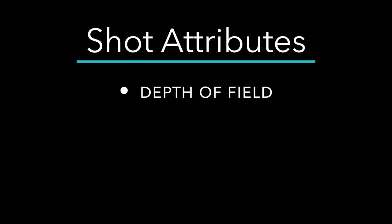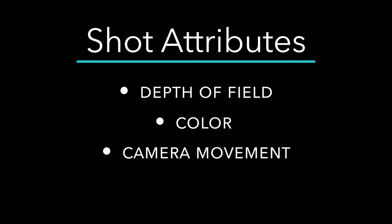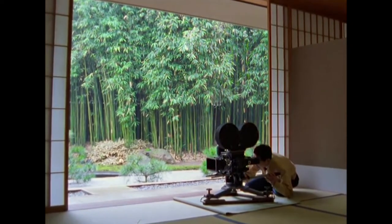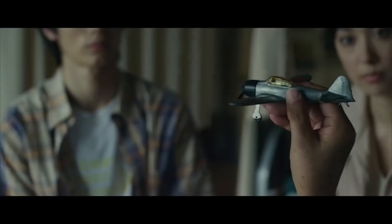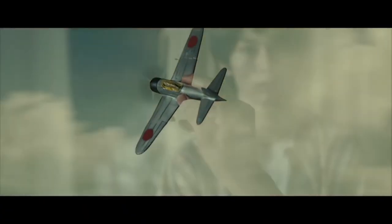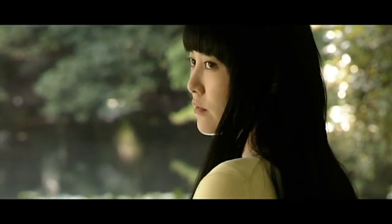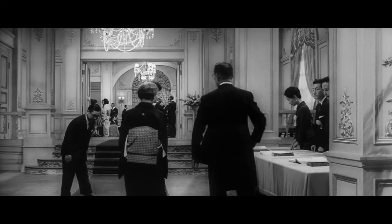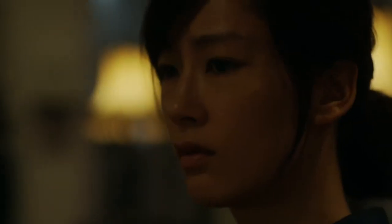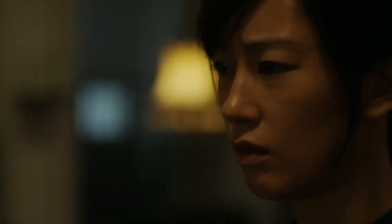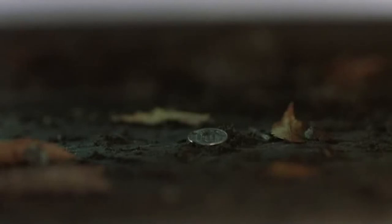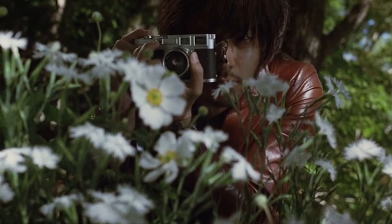There are three more attributes of the shot to consider: depth of field, color, and camera movement. Depth of field is created by manipulation of the camera aperture, an adjustable hole in front of the camera lens that determines how much light travels through it. A large aperture lets in more light and creates shallow focus, allowing cinematographers to highlight specific elements of the mise-en-scene with everything else blurred. A small aperture reduces light to the lens and creates deep focus, in which everything in front of the camera is clearly visible. Cinematographers can manipulate attention by switching between depths of field within the same shot through a technique called rack focus.